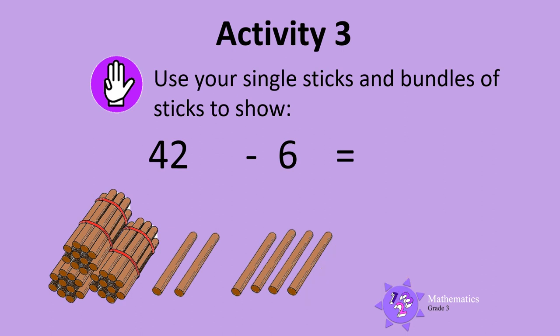Let's count how many sticks we have left. First count the bundles: 10, 20, 30. Then count the single sticks: 1, 2, 3, 4, 5, 6. That makes 36. So 42 take away 6 is 36. You are a math star! See you next time.